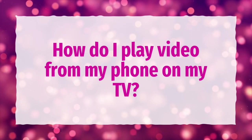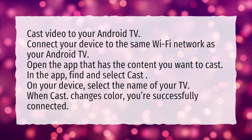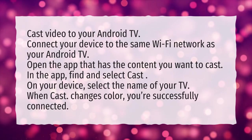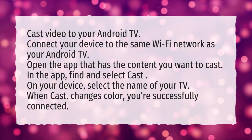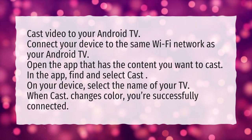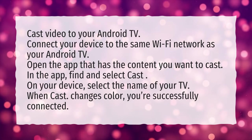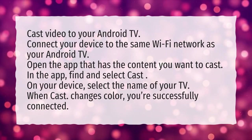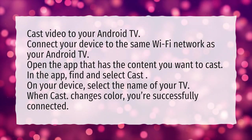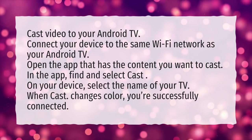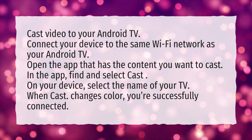How do I play video from my phone on my TV? Cast video to your Android TV. Connect your device to the same Wi-Fi network as your Android TV. Open the app that has the content you want to cast. In the app, find and select Cast. On your device, select the name of your TV. When Cast changes color, you're successfully connected.